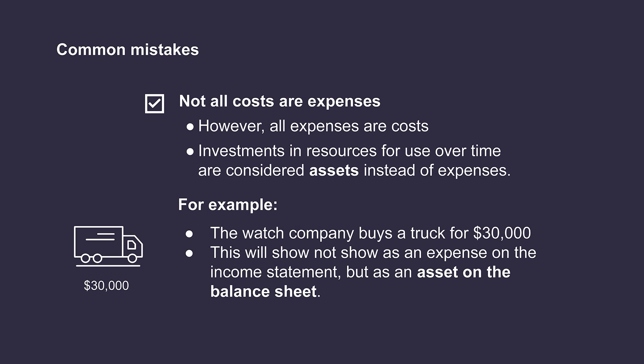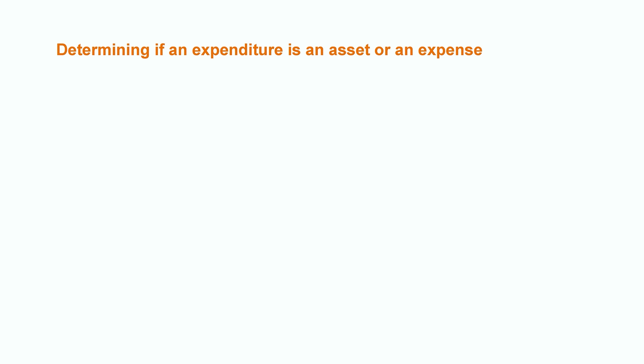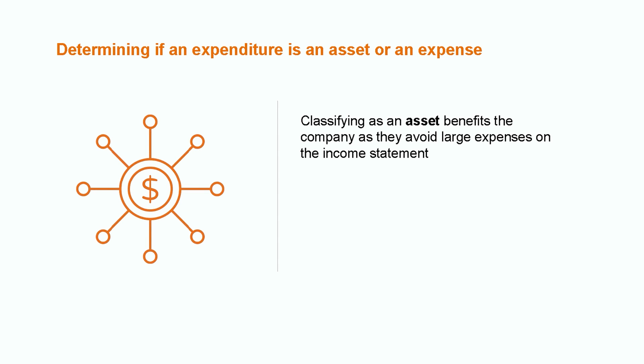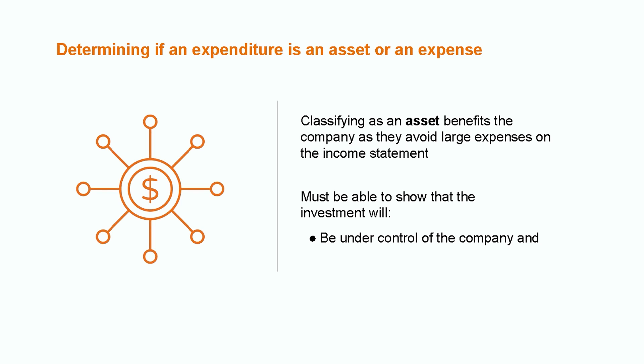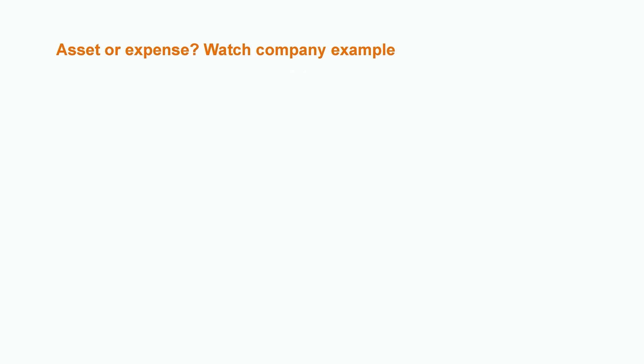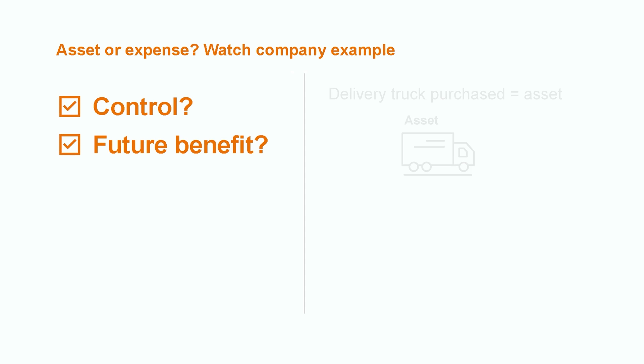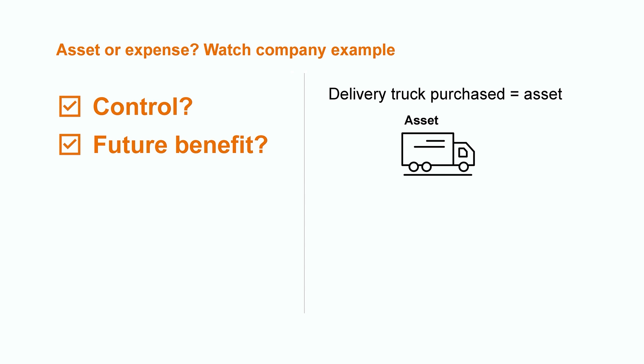This leads us to an important question: how do we determine whether an expenditure results in an asset or an expense? Accounting standards lay out criteria that need to be met — ultimately, we need to show that the purchase results in a resource the company controls and that will likely bring future economic benefit. In the delivery truck example, the company owns and controls the truck and plans to use it to generate revenue, so they can record the $30,000 as an asset instead of an expense.